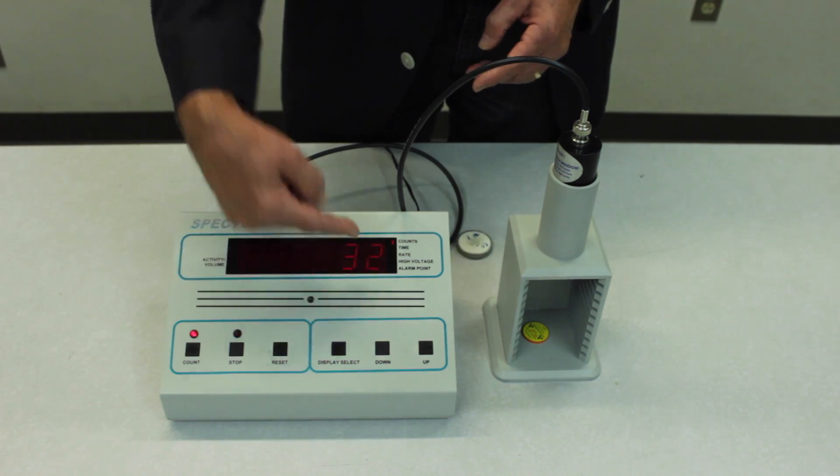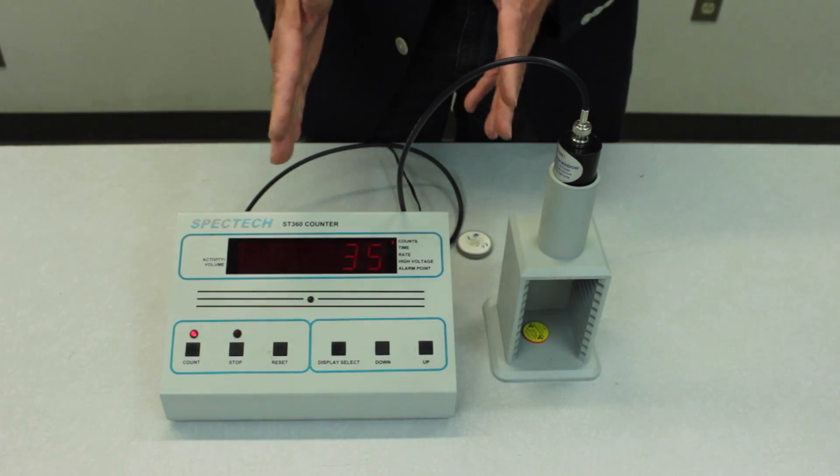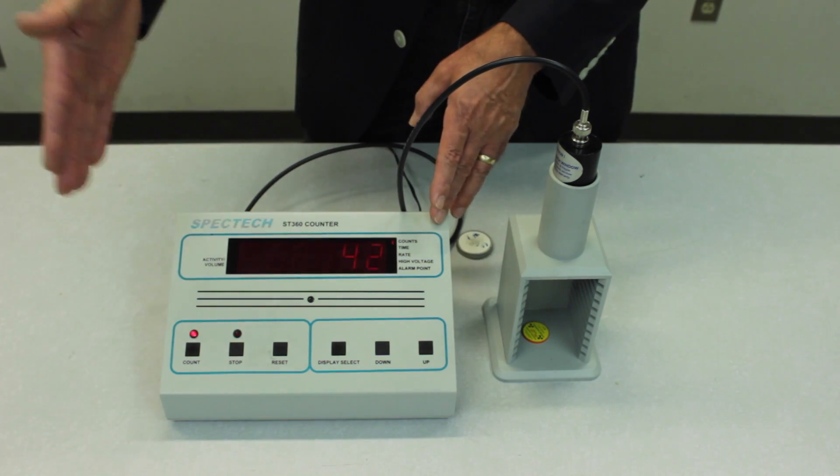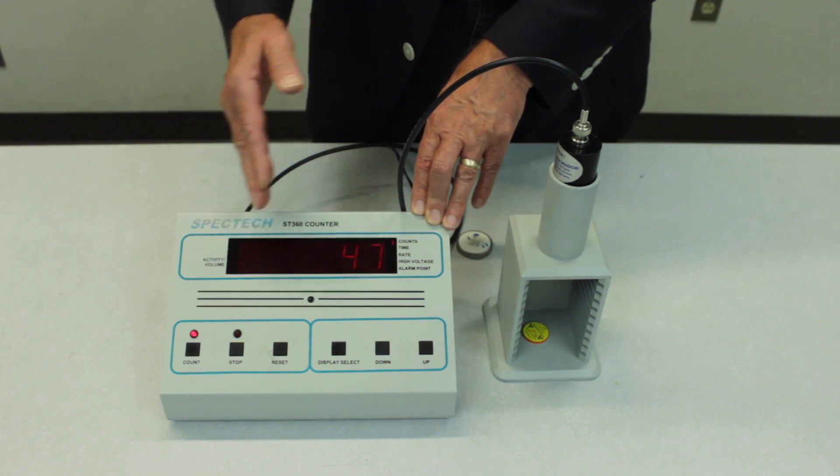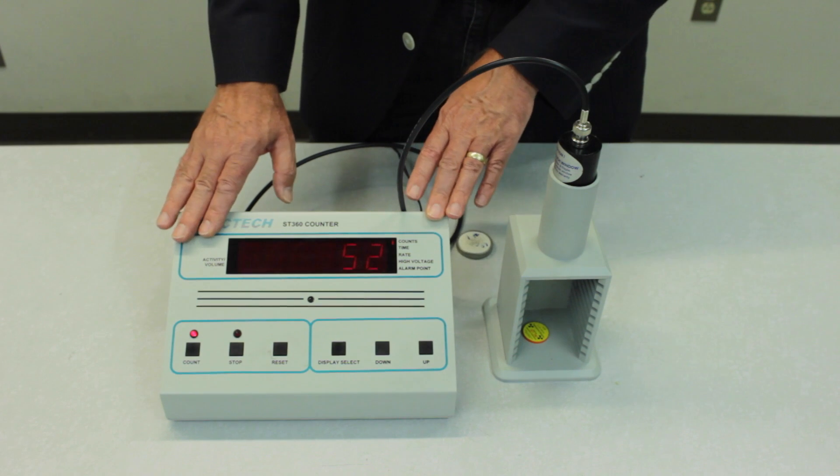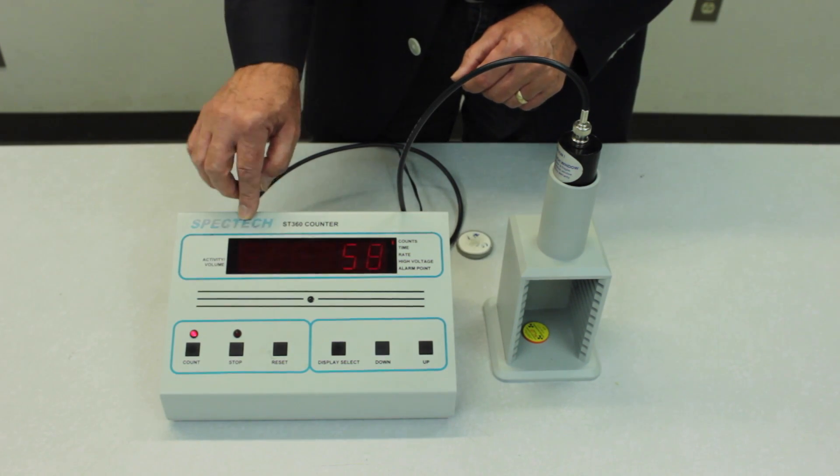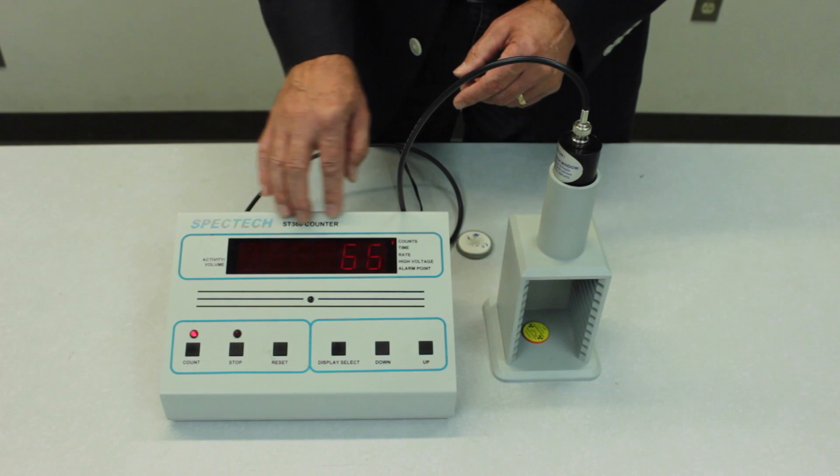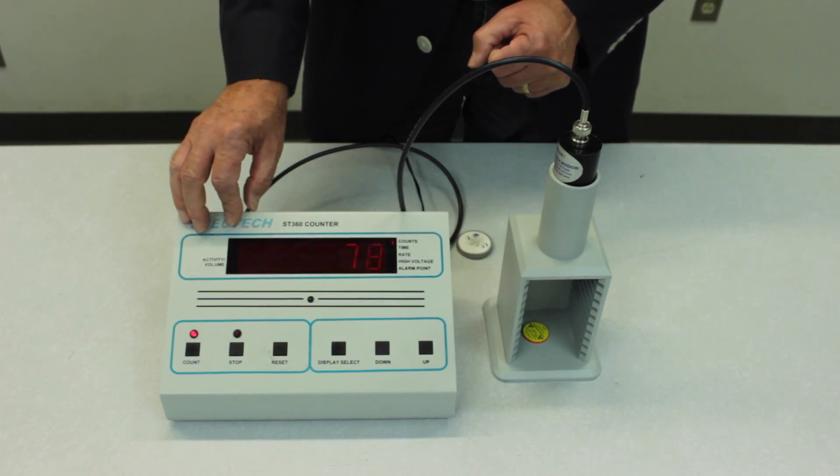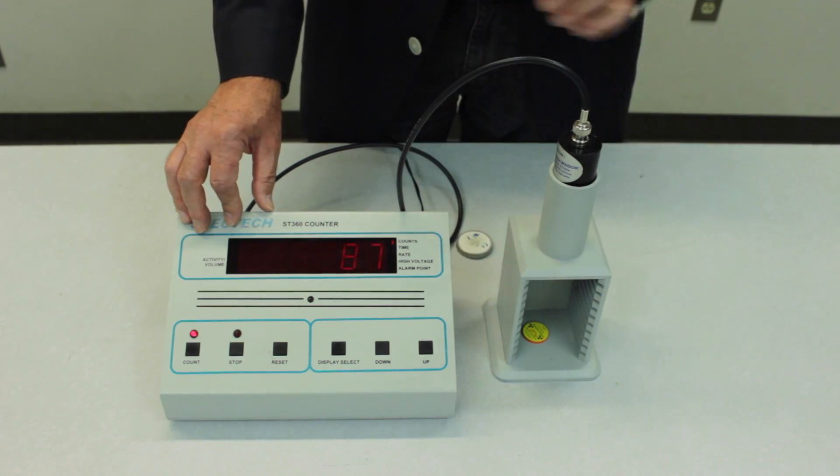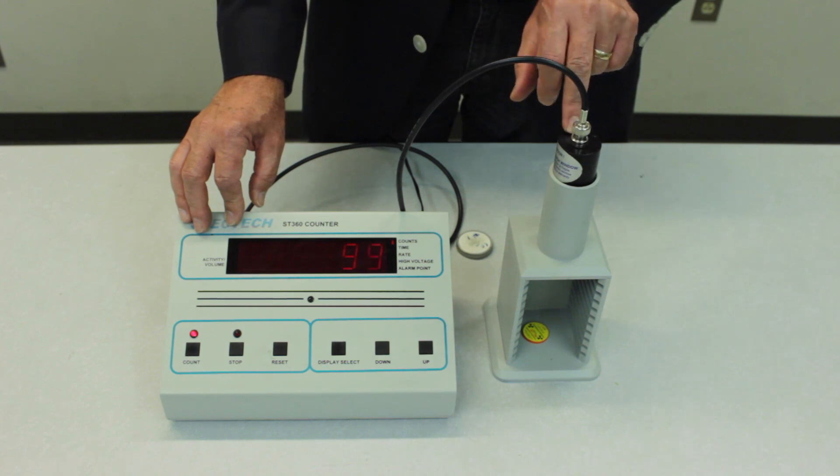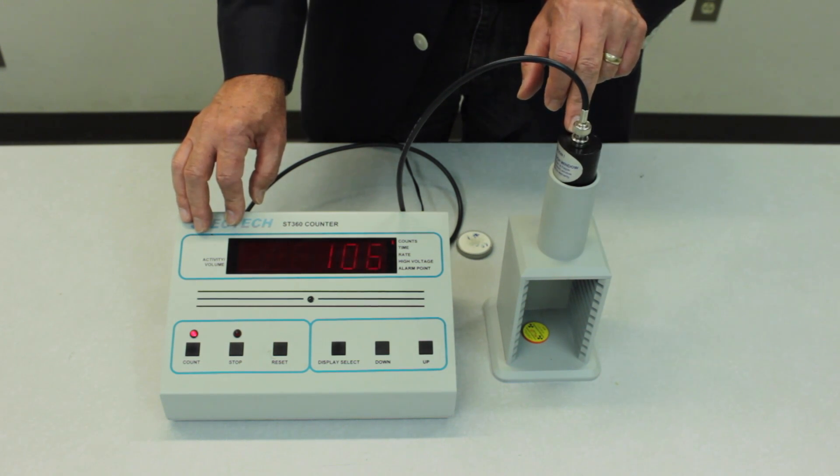So you want to change the high voltage until you find what the threshold is. Then count for a minute at each voltage in increments of twenty volts up until you discover the beginning of the breakdown region. And then I recommend plotting the data as you go along so you can discover where the breakdown region begins. And then the midpoint of the plateau is the proper operating voltage for this tube. So you'll set that same operating voltage each time you come in to do the next pieces of the experiment.